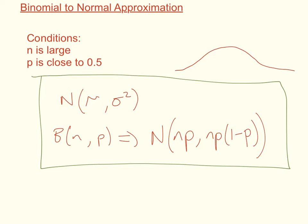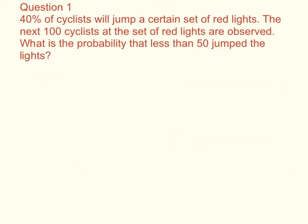We're now going to move on to looking at a question that uses this, and we'll also be ensuring that we use the continuity correction that we explored in my previous video. So here's question 1. It states 40% of cyclists will jump a certain set of red lights. The next 100 cyclists at the set of red lights are observed. What is the probability that less than 50 jump the lights?